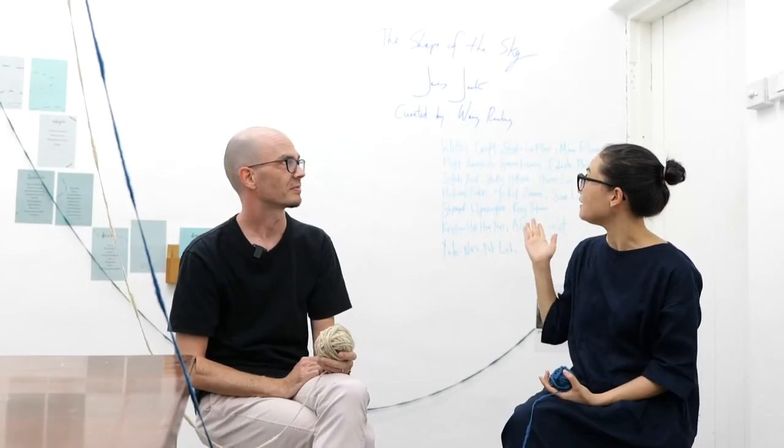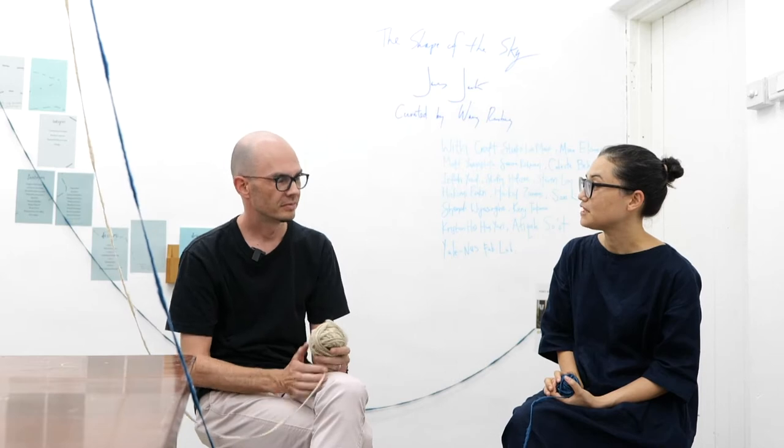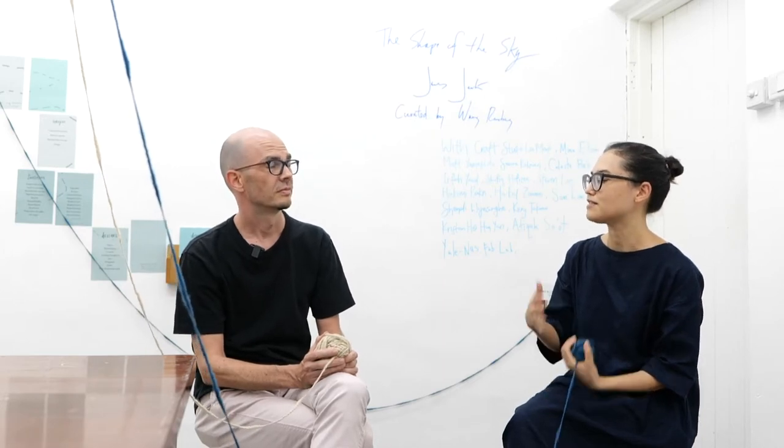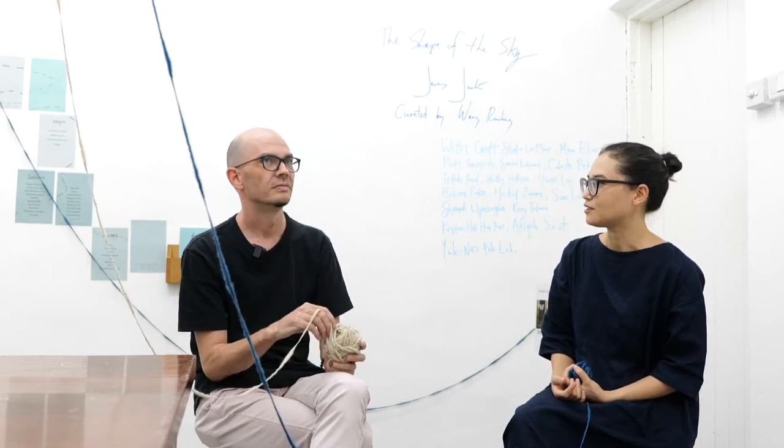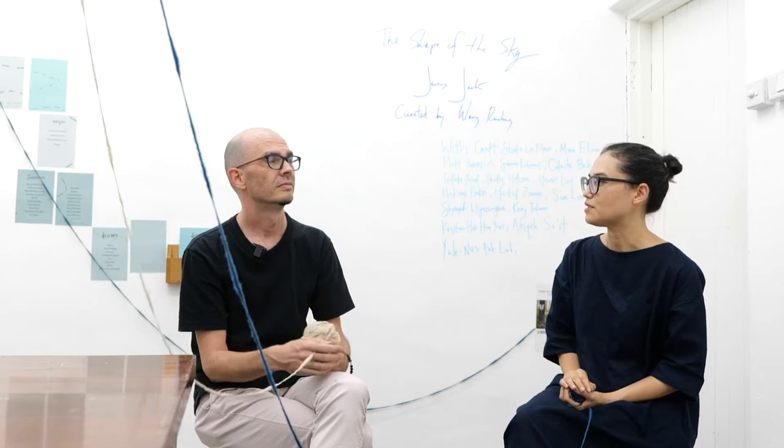I do want to ask you about the title, The Shape of the Sky, but maybe we can talk a little bit about the space that we're in, how you've thought about this particular presentation as the premise that it's one work, but obviously there's many different things. There's the sort of strings or lines that are connecting fairly disparate things, concepts, time periods. So maybe start there.